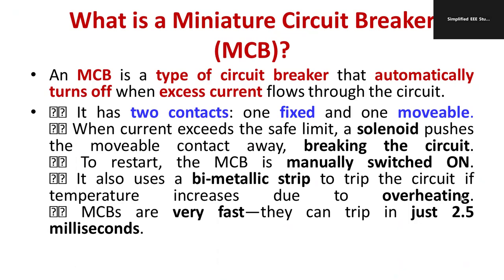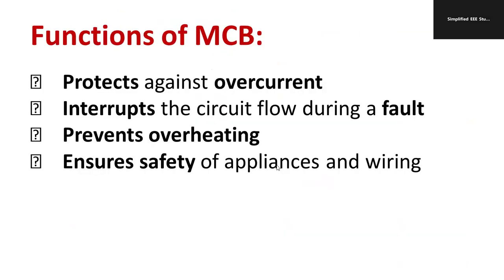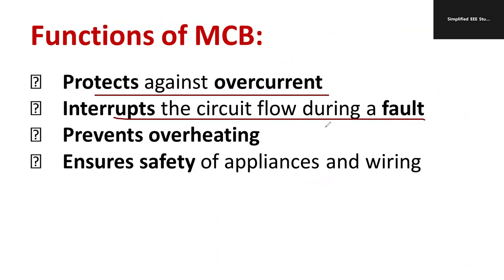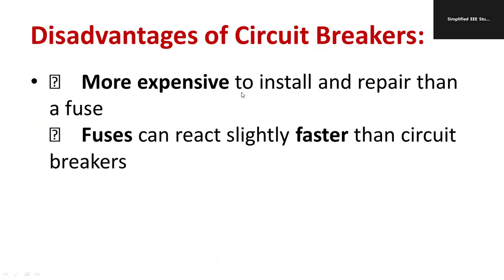This type of arrangement is known as a miniature circuit breaker. The MCB acts very fast — approximately 2.5 milliseconds — and also responds when temperature rises. The major duties of MCB are: to protect against overcurrent or short circuit, interrupt the flow of current during fault conditions, prevent overheating, and ensure safety. The major advantages are reliability in operation, easy isolation of the faulty portion from the healthy portion, sensitivity to fault conditions, and current limiting ability.